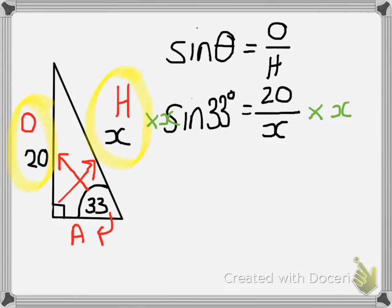Now if we rewrite that out neatly, we have x times sin 33° equals 20. So we've removed the fraction from the right hand side. However, our aim is still to get x by itself, so now we have to look at the left hand side of the equation.